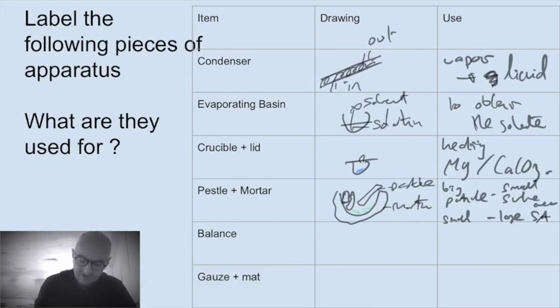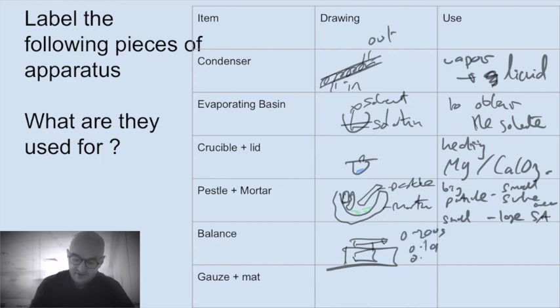Okay. A balance. Balance are always fascinating to students. Why? Because you don't tend to have them at home. It has a reading here. It could be in a range 0 to 200 g. It might be to 0.1 g or 0.01 g. So this is for massing clearly solids. You can actually do liquids on the top as well. You always struggle with gases.